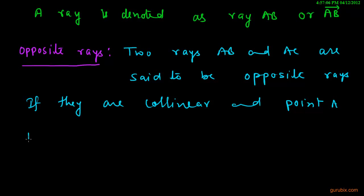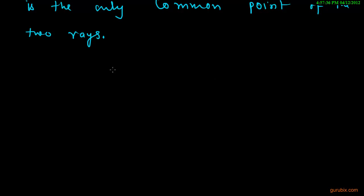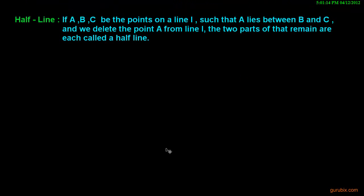Let us look at the figure of opposite rays. Suppose this is the point A and this is the point B and this is the C. So in this figure, rays AB and AC are opposite rays. Now we shall move to the topic half line.